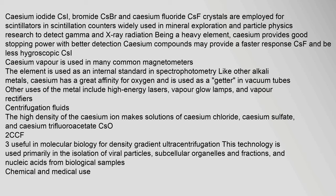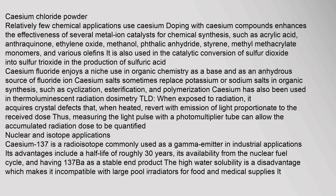Other uses of caesium metal include high-energy lasers, vapor glow lamps, and vapor rectifiers. The high density of the caesium ion makes solutions of caesium chloride, caesium sulfate, and caesium trifluoroacetate (CsO₂CCF₃) useful in molecular biology for density gradient ultracentrifugation. This technology is used primarily in the isolation of viral particles, subcellular organelles, and nucleic acids from biological samples.